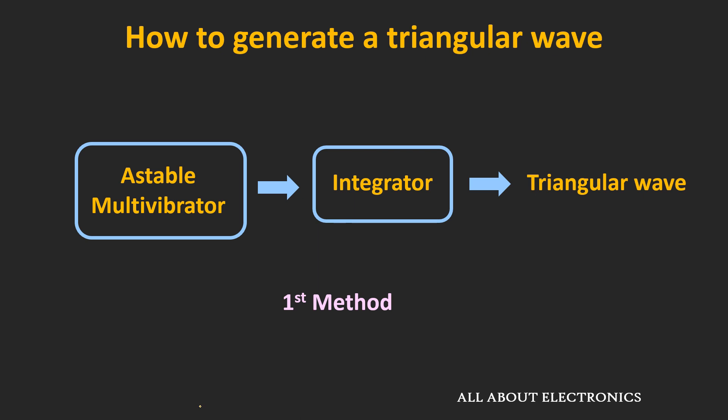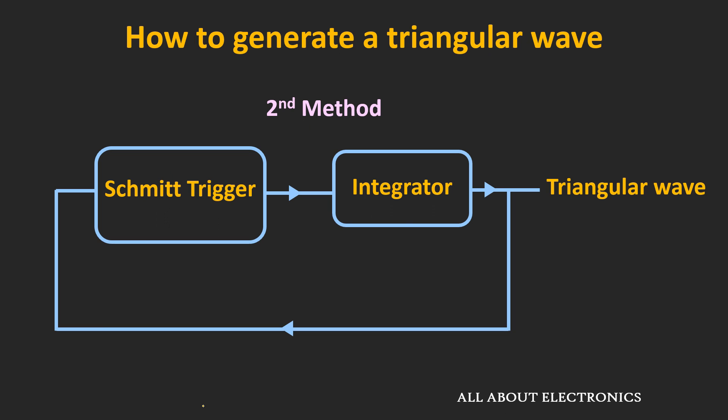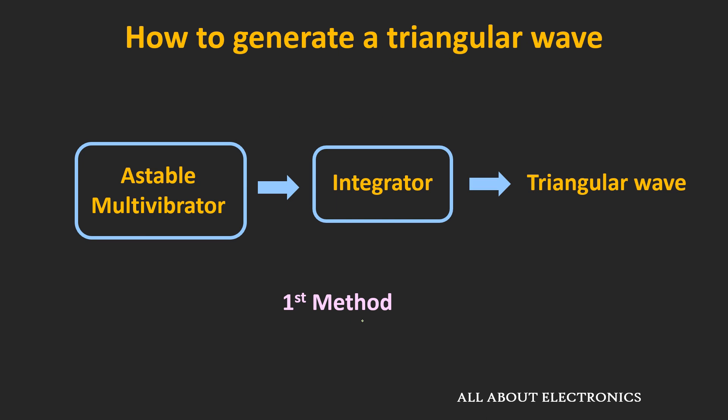For generating this triangular wave there are two methods. In the first method, we can use an astable multivibrator for generating the square wave, and the output of this astable multivibrator is given to the integrator circuit. In the second method, using a Schmitt trigger and the integrator circuit, it is possible to generate this triangular wave, where the output of the integrator is fed back as one of the inputs to the Schmitt trigger. In this video we will cover the first method.